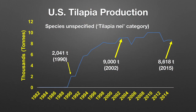What is tilapia production in the U.S.? In the early 1980s there was very minimal or no tilapia production. From 1989 to 1990 there was a dramatic increase from almost nothing to 2,000 tons. The species is categorized in FAO data as 'tilapia nei' — not elsewhere included — meaning the tilapia species are unspecified. Production continued to increase dramatically from 1990 to 2002, reaching 9,000 tons, and in 2015 production was 8,618 tons.